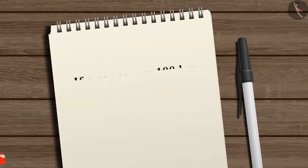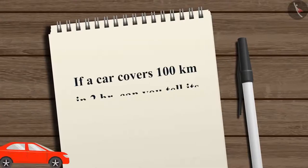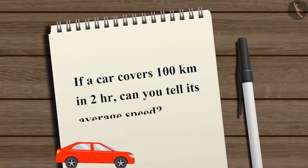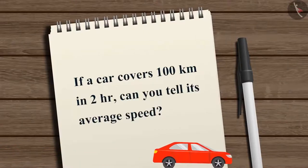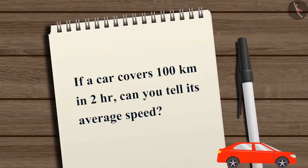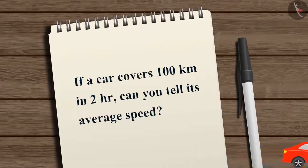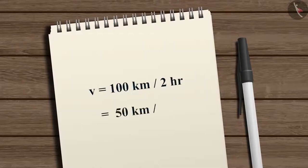Let's take an example. If a car covers 100 kilometers in 2 hours, the average speed V equals 100 kilometers divided by 2 hours, which equals 50 kilometers per hour.